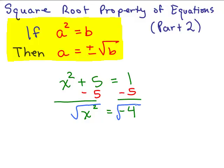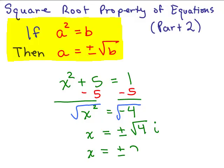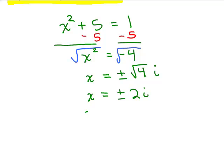Now I've isolated x squared, so I can take the square root of both sides. Remember it's plus or minus — it's very important to put the plus or minus — the square root of negative 4. We can simplify: the square root of negative 4 is the square root of 4 times i, because i is the square root of negative 1. The square root of 4 simplifies to 2, so this is plus or minus 2i. That gives us two solutions: x equals 2i or x equals negative 2i.